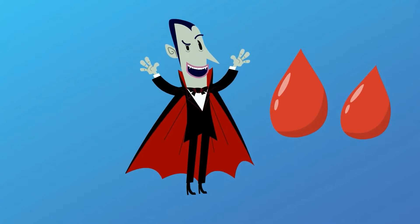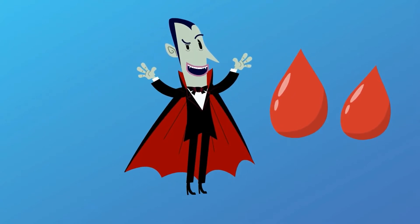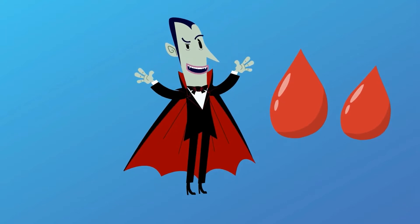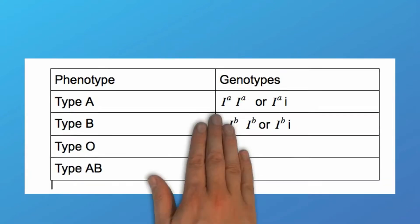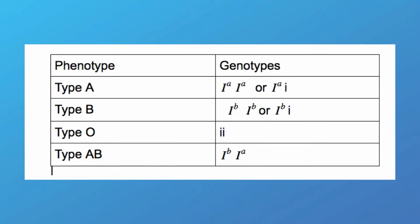Sometimes you have multiple alleles that control a trait. With human blood type, it is controlled by three alleles. In this chart, you will see that type A and type B are controlled by multiple alleles of the same trait.